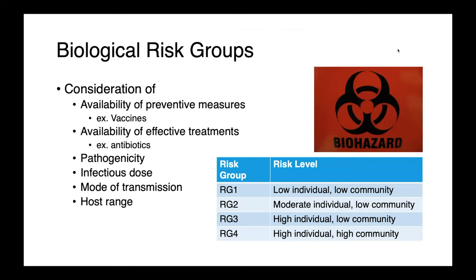Biological risk groups, on the other hand, consider factors related to the infection itself. Do we have preventive measures available, things like vaccinations or effective treatments like antibiotics? How pathogenic is the organism — does it tend to cause mild infections or very serious life-threatening infections? What's the infectious dose — do you have to drink an entire vial of a culture, or is a single organism enough to make you sick? What's the mode of transmission — would you have to actually ingest the organism, or is it airborne? And then what's the host range — does it infect only people, or can it be found in many species?